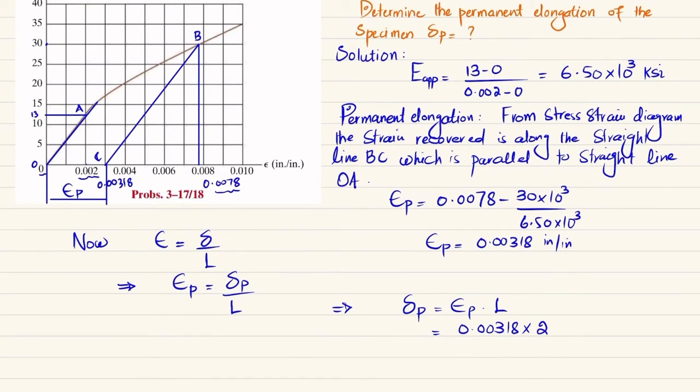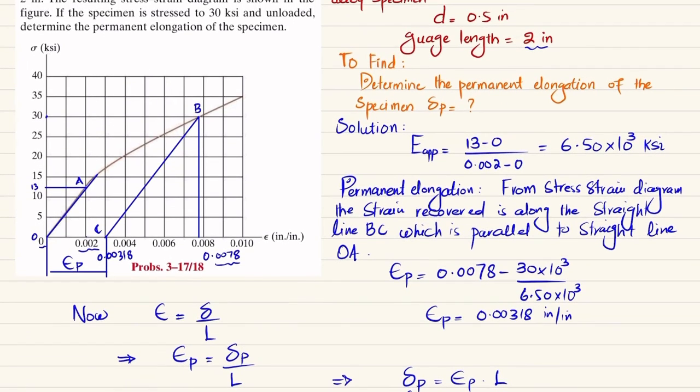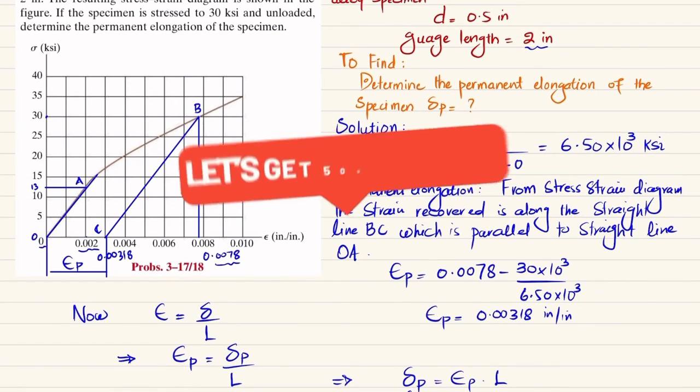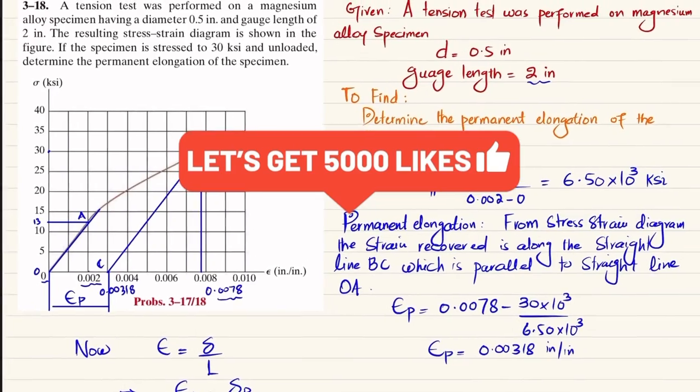So we multiply by 2 and you will get the permanent elongation, which is 0.00637 inches. This is the answer to our question—this will be the permanent elongation in the originally 2-inch gauge length magnesium alloy specimen.